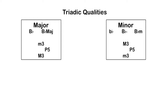Once again, a minor third and a major third added together creates a perfect fifth between the root and the fifth of the chord. Minor triads are often described as having a dark or sad sound, but again a skilled composer can manipulate that.